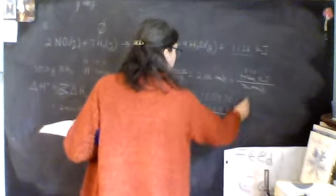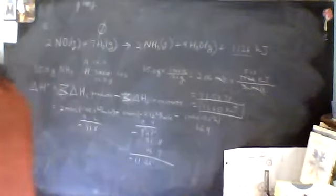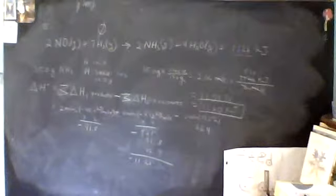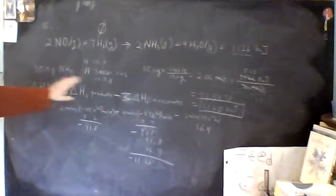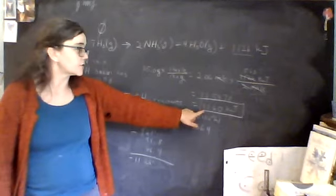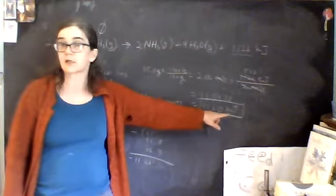So for 35.0 grams of ammonia, when 35.0 grams of ammonia are made, there's 1,160 kilojoules released.